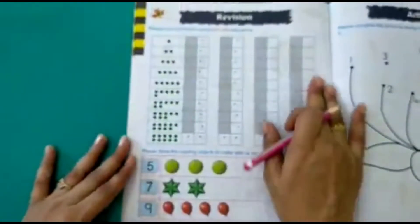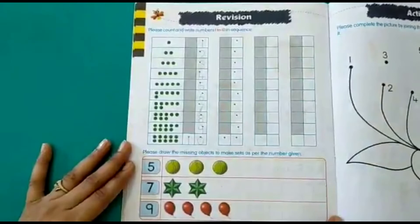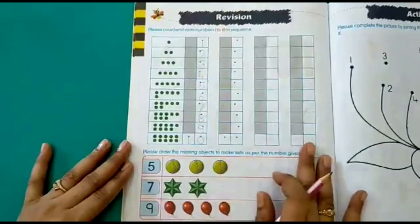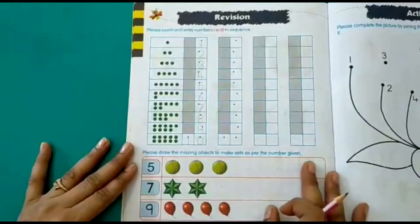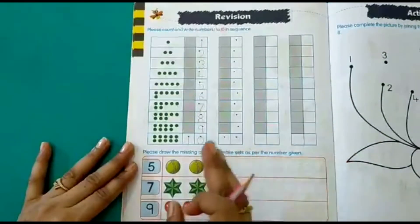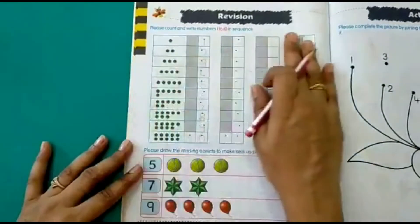we will be revising whatever we have learned till now. Like from numbers 1 to 10, we have finished. You have to write number 1, 2, 3 till 10. So this is the revision time for us.